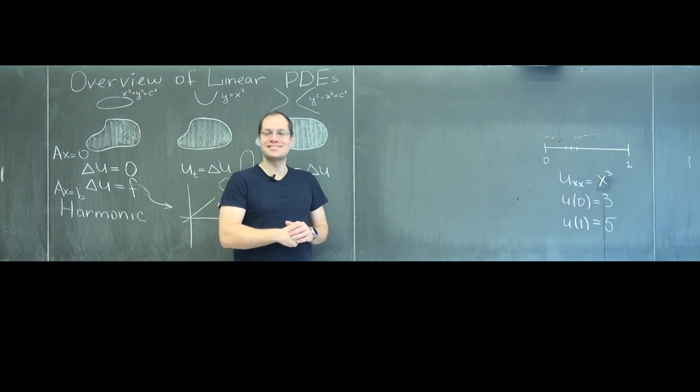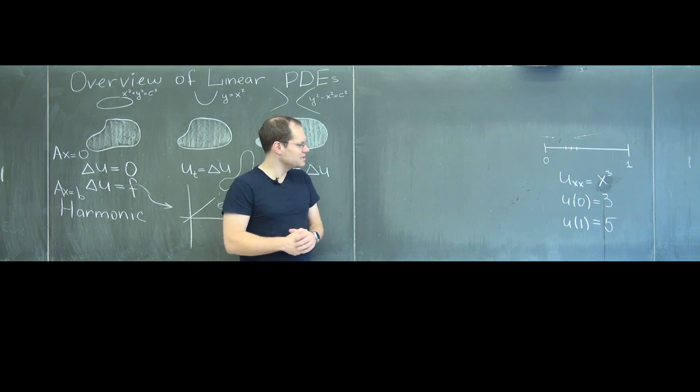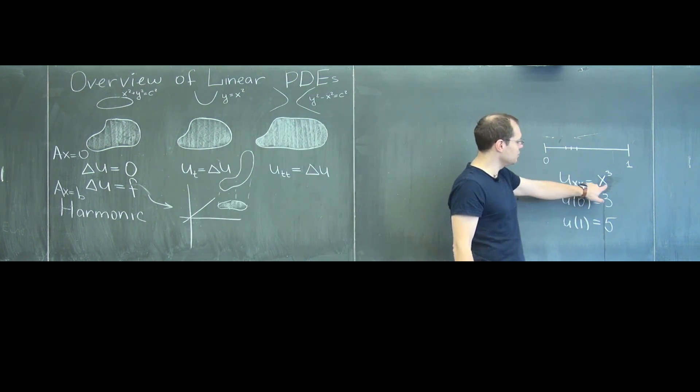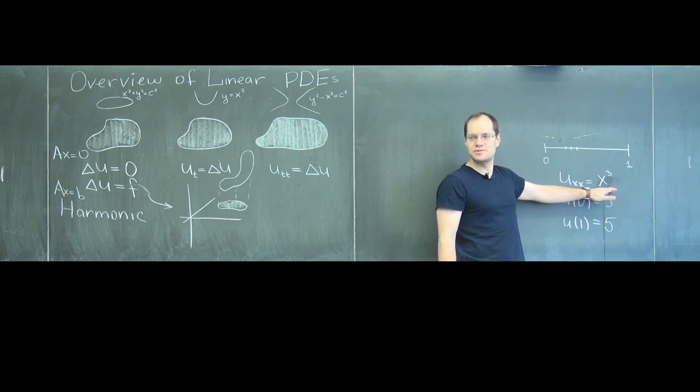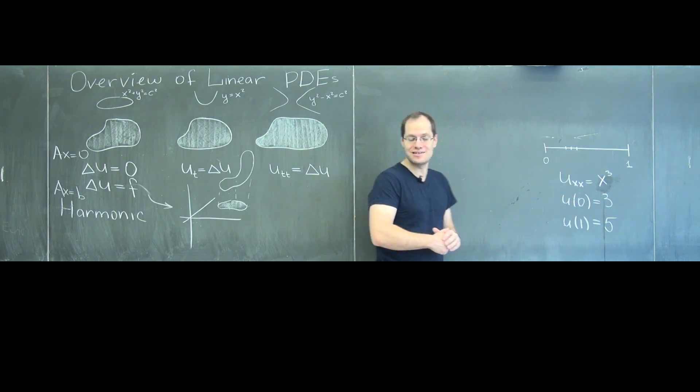Alright, let's solve the second simplest partial differential equation, Poisson's equation, in one dimension, where the right-hand side, known as the kernel, I don't know why, is x cubed, but it doesn't matter what function that is.